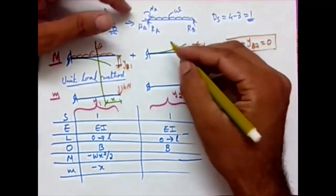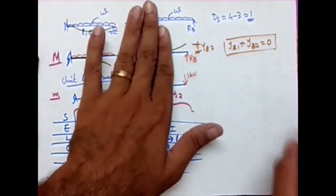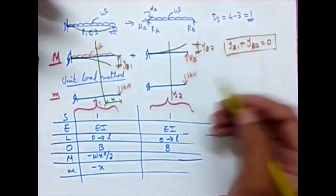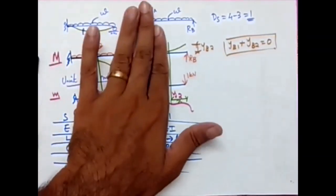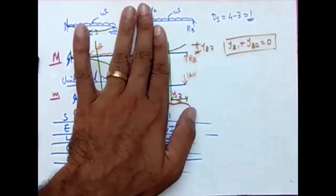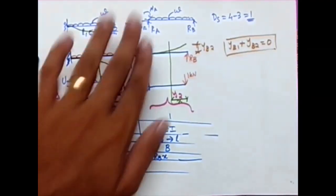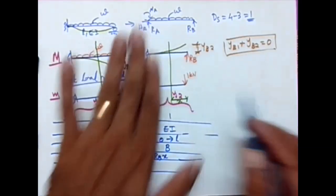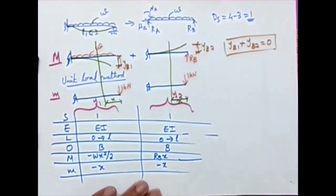For the second case with redundant Rb, taking a section at distance X from origin B, the capital M figure gives Rb times X, which is a sagging moment, so capital M equals Rb·X. The small m figure again gives 1 times X hogging, so just like the first case, small m equals minus X.